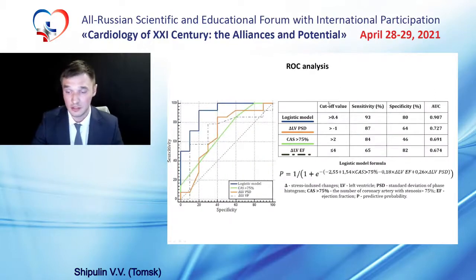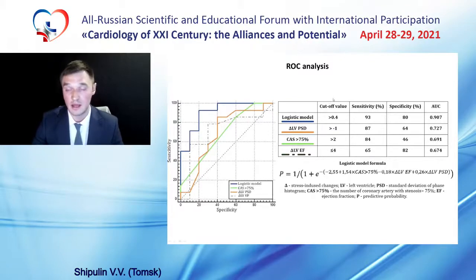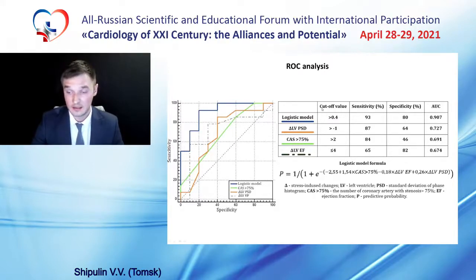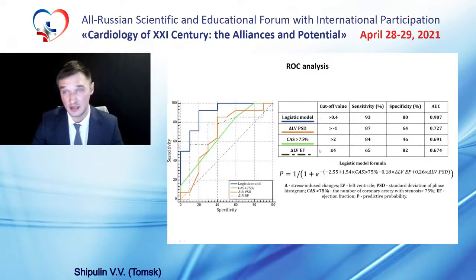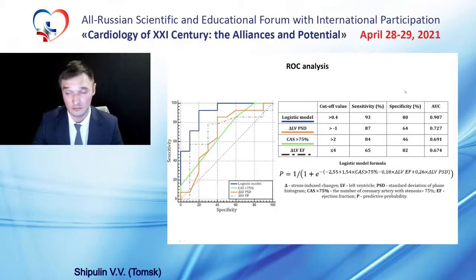According to ROC analysis, the highest area under the curve value was shown by left ventricle phase standard deviation, which reflects mechanical dyssynchrony. A logistic regression model including all these indices had an area under the curve value significantly higher than each of these indices alone.